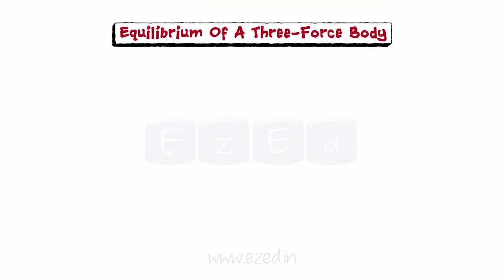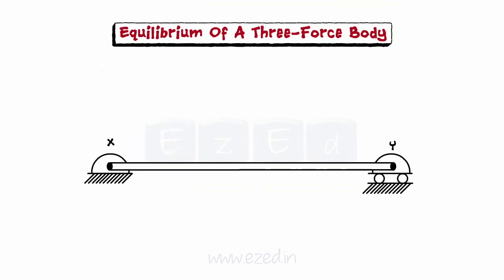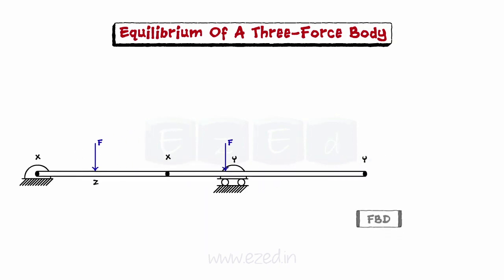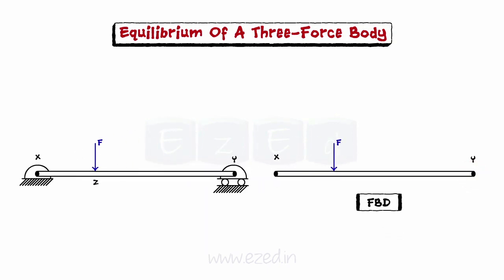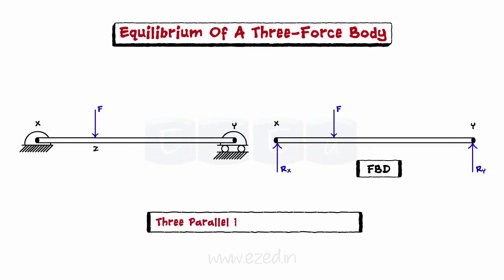Consider the following example. A beam XY is in a state of equilibrium. It is hinge supported at X and roller supported at Y. Let a vertical load F be applied on the beam at Z. We know that the reaction at Y, that is RY, would be vertical. Since the beam is in equilibrium, hinge reaction RX would also be a vertical force. This is therefore a case of three parallel forces in equilibrium.